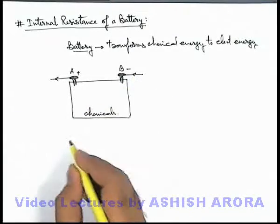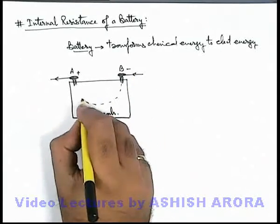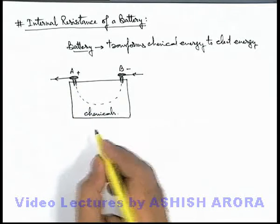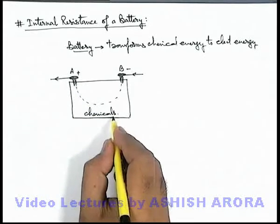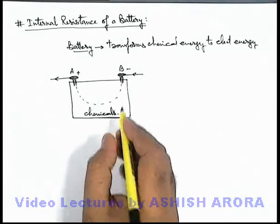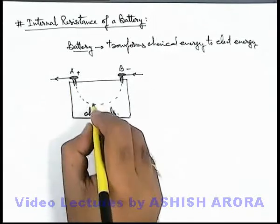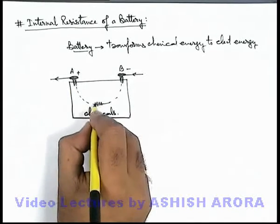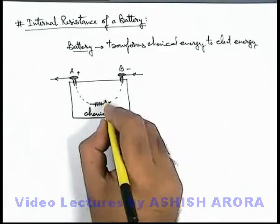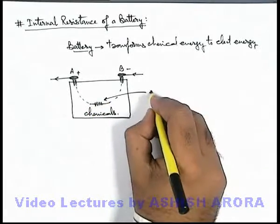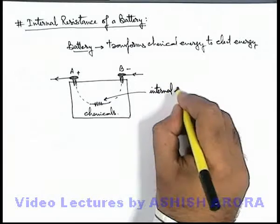If the battery supplies a current, within the battery the current flows through the chemicals. Obviously we cannot consider these chemicals to be perfect conductors, so when current flows through the internal structure of the battery, these chemicals offer a resistance in the flow of current. This resistance we term as the internal resistance of the battery.